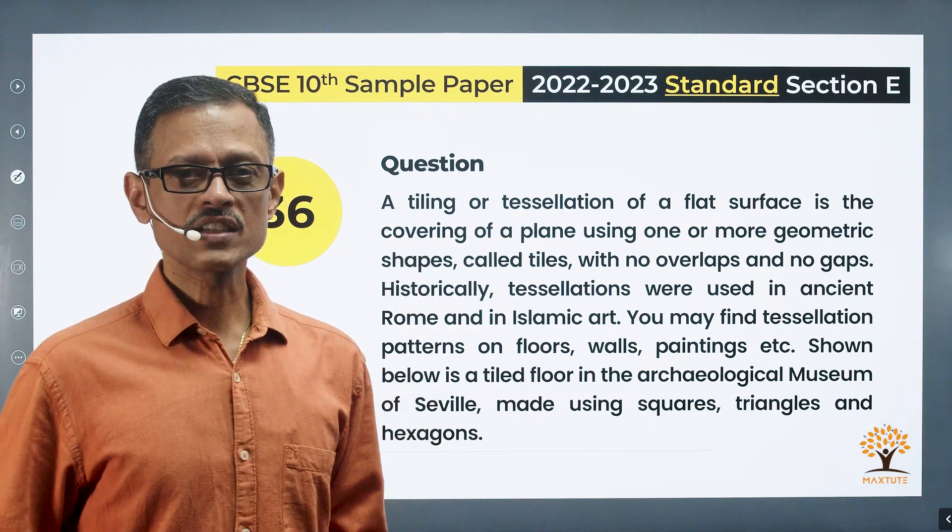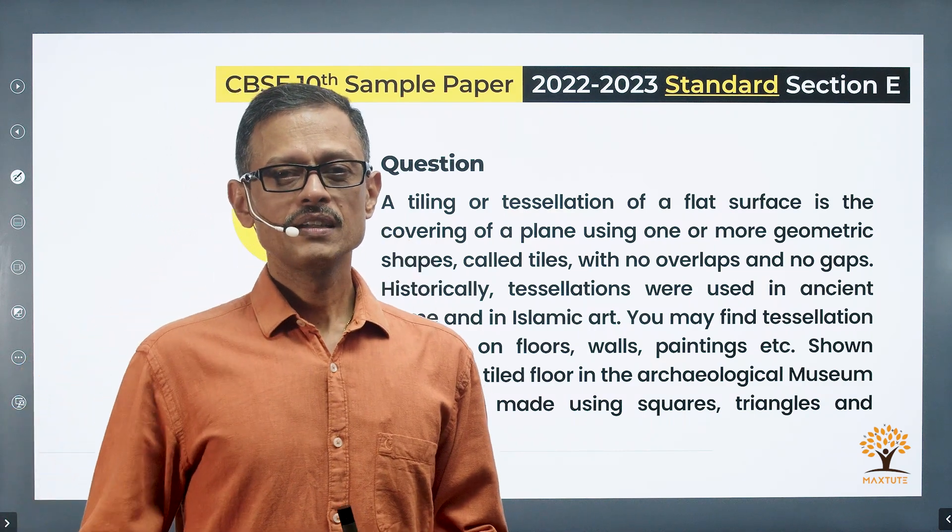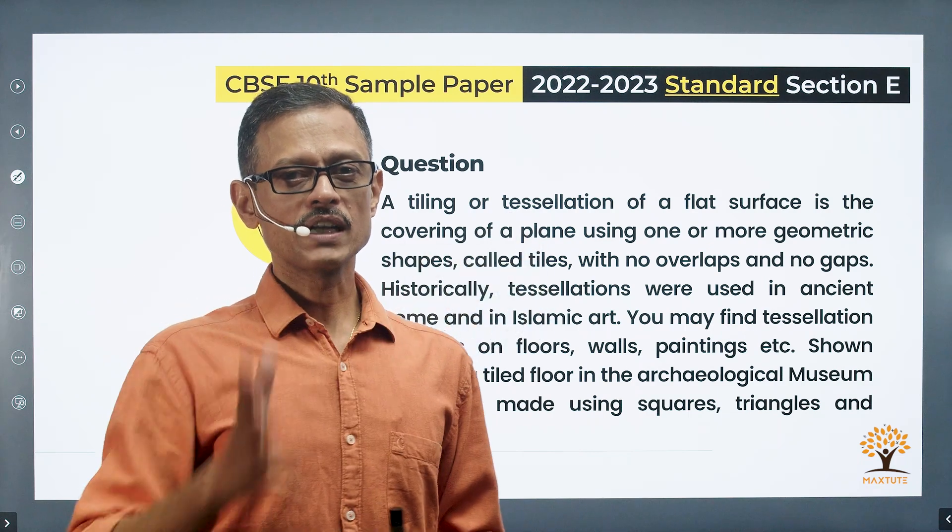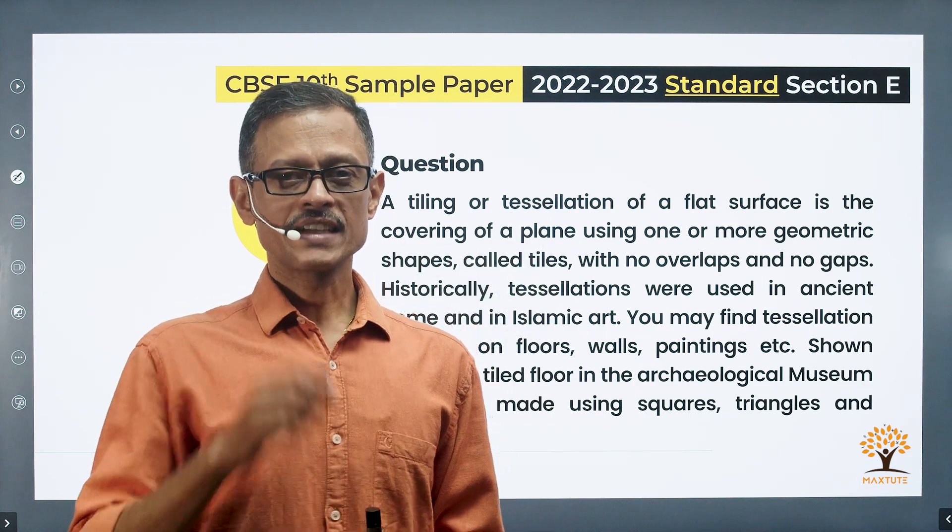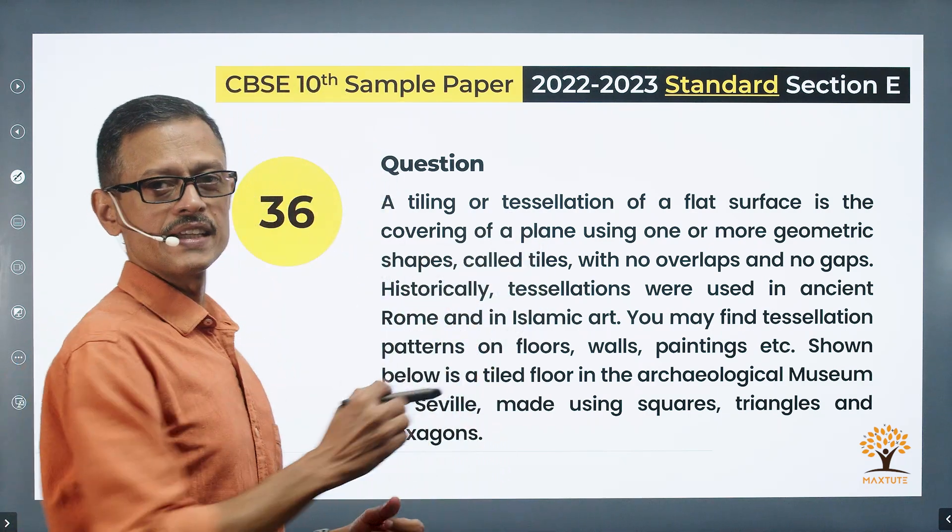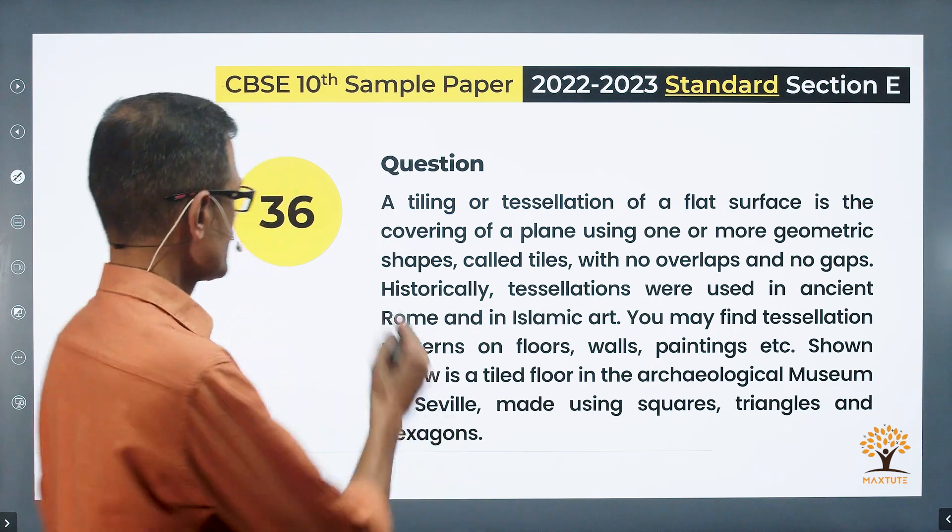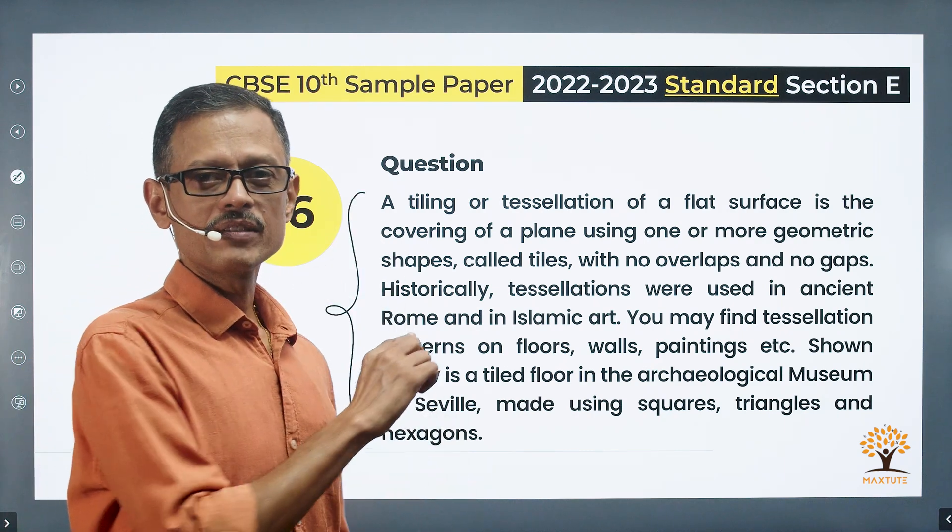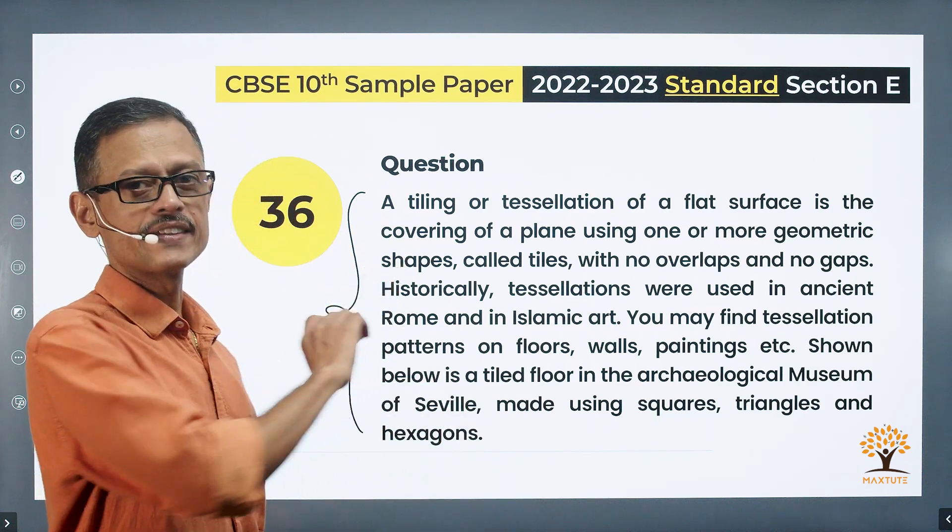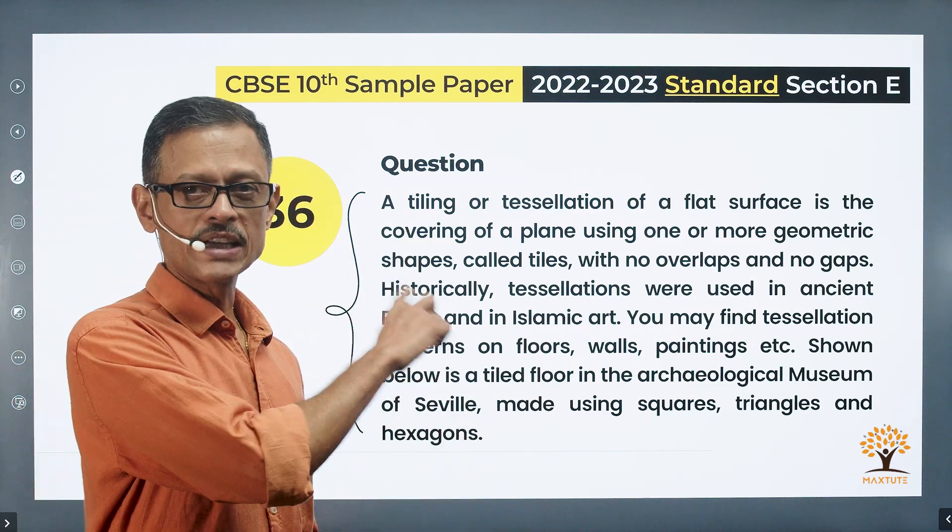Question number 36, this is the first of the three case study questions. There are two one-mark questions and a two-mark question to each case study. Let's get started. This question is from the topic coordinate geometry.